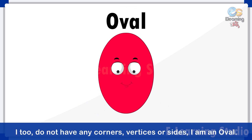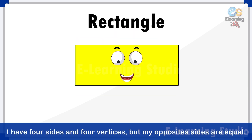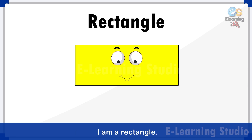I do not have any corners, vertices, or sides — I am an oval. I am a rectangle, but my opposite sides are equal — I am a rectangle.